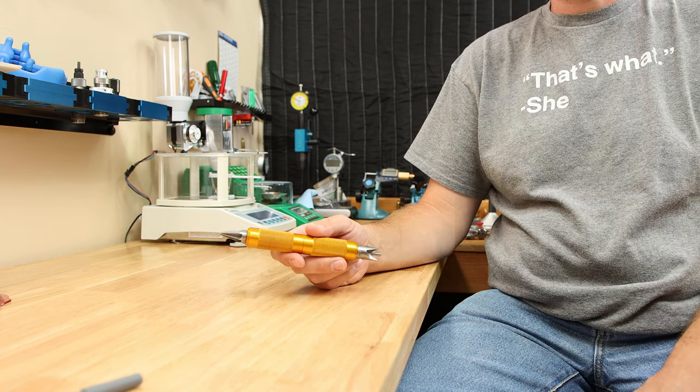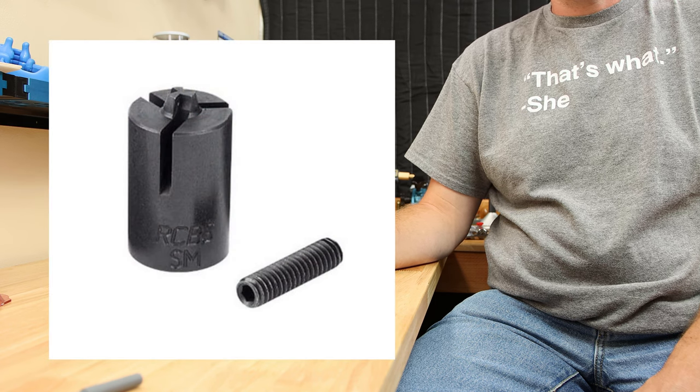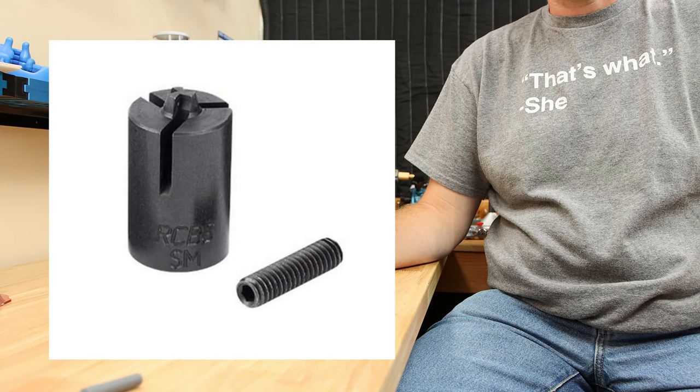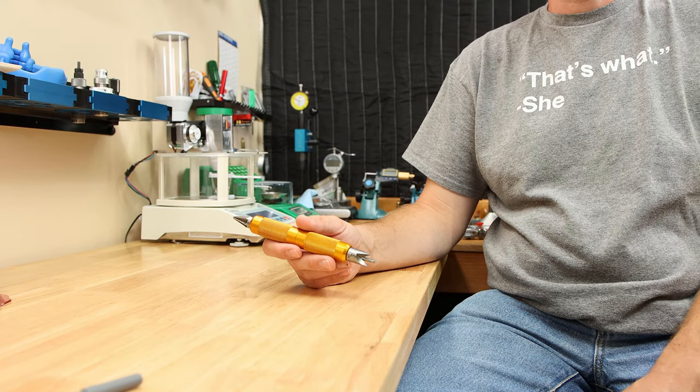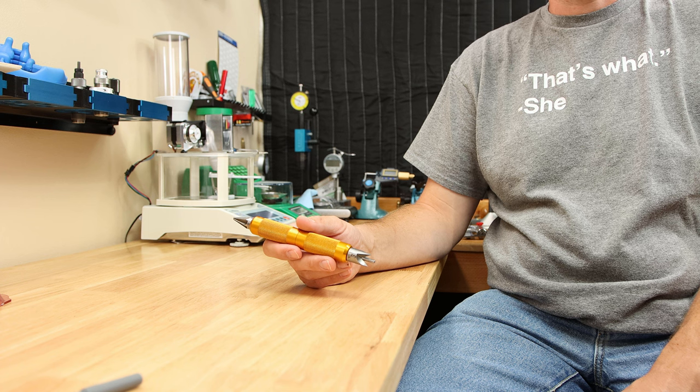If you're going to be working with much military brass, I would consider the RCBS crimp remover. Depending on which primer pocket size, they're about $20 each. I've heard they work very well. And if you're going to be doing a lot of military brass, I think it'll be a reasonable investment.